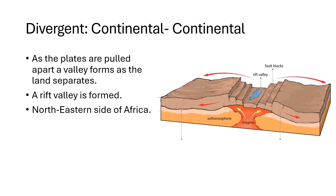Our next type of plate boundary is also divergent, but this is when two continents are moving apart — continental and continental. As the plates move apart and are pulled away from each other, a valley forms in the middle as the land separates. The magma rises up and the plates get pulled outward. All divergent plates have convection cycles that come up in the middle and pull outward.